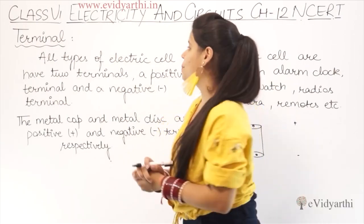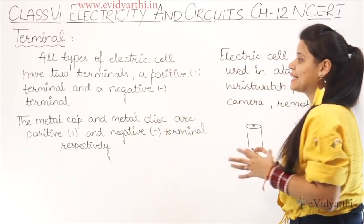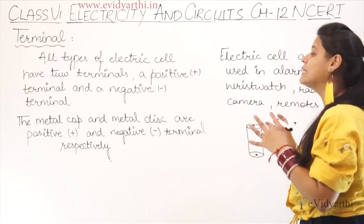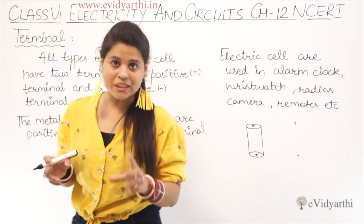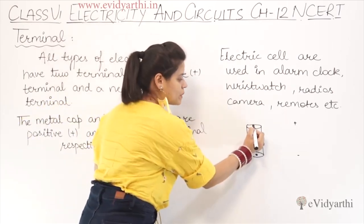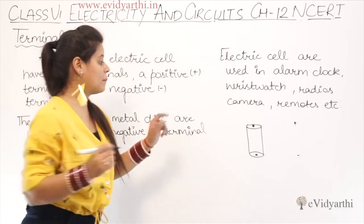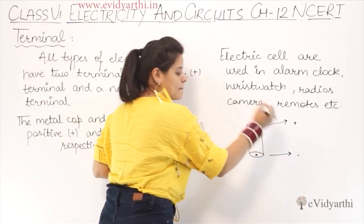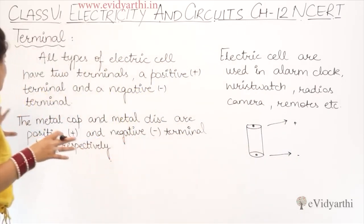Now moving to our next topic, which is terminals. What is a terminal? All types of electric cells have two terminals - a positive terminal and a negative terminal. All cells have two terminals, basically two endings. One end sticks out from the top and one is completely flat. The protruding part has 'plus' written on it and the flat part has 'minus' written on it. So these are the terminals.